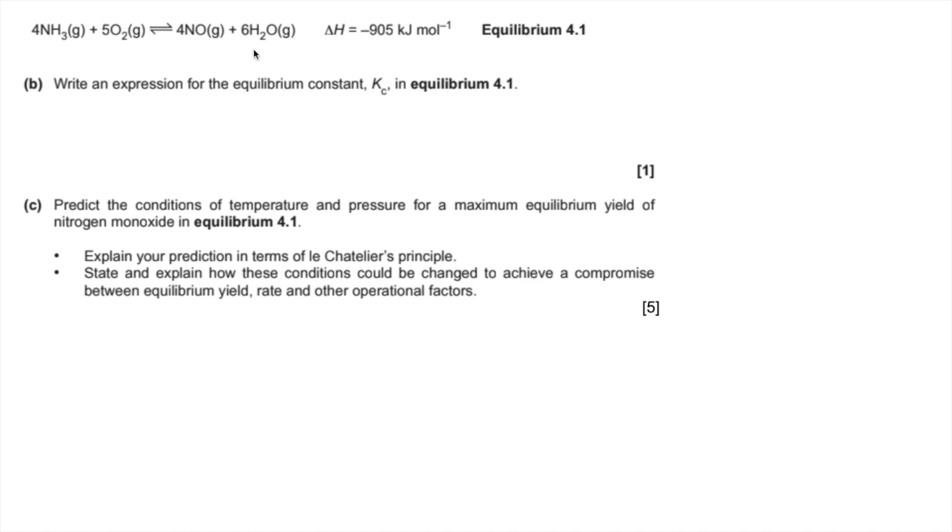So KC is equal to the equilibrium concentration—square brackets for these—of NO to the power 4 multiplied by the H2O gas to the power 6, and then that's divided by the equilibrium concentration of ammonia to the power 4 multiplied by the equilibrium concentration of oxygen to the power 5.